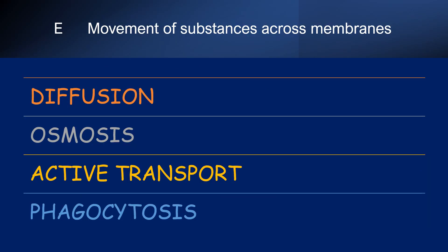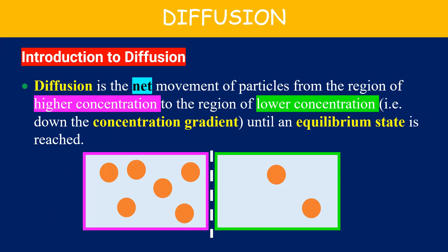There are four major transport mechanisms of substances across membranes, not only limited to cell membranes. These include diffusion, osmosis, active transport, and phagocytosis. Diffusion is the net movement of particles from the region of higher concentration to the region of lower concentration — or down the concentration gradient — until an equilibrium state is reached.